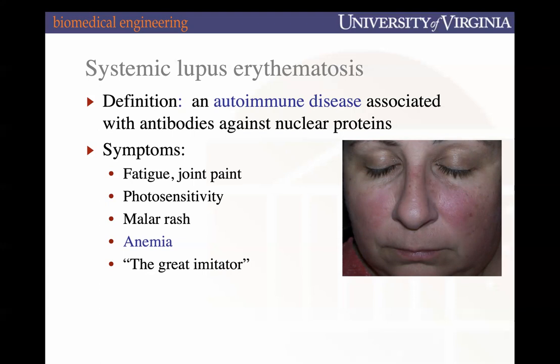Lupus affects nearly every organ, and when it becomes fatal it's typically due to sufficient autoimmune damage causing organ failure. There's also anemia — a reduction in red blood cells. Lupus has also been dubbed 'the great imitator.'